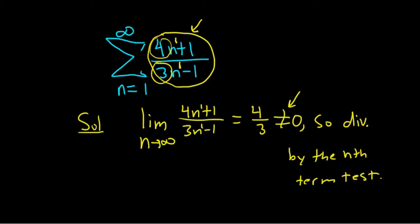What happens if you get 0? Then in that case, you get no info and you can't really say anything useful with this test. Whenever you take this limit and it's not 0, it diverges by the nth term test. That's it.